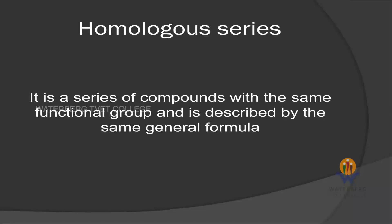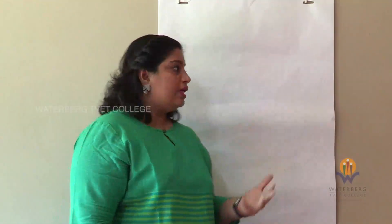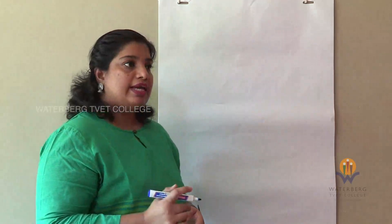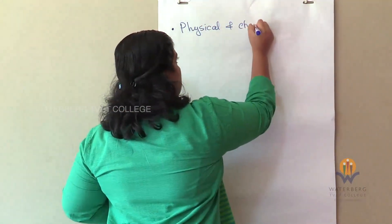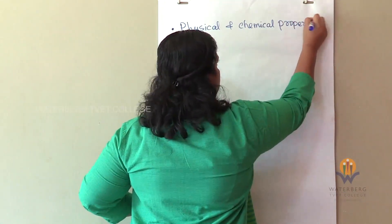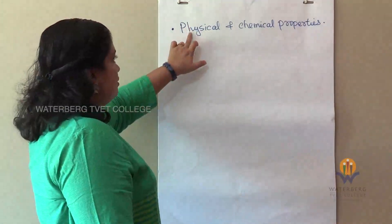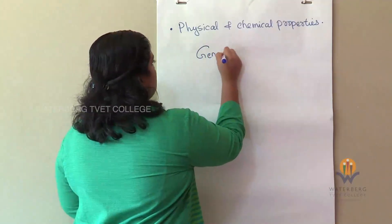Let us see what is a homologous series. It is a series of compounds with the same functional group, described by the same general chemical formula. A functional group is an atom or a group of atoms that determines the physical and chemical properties of an organic compound.